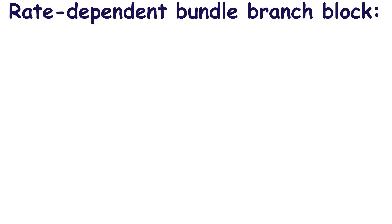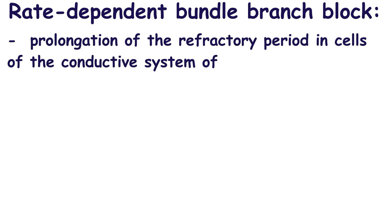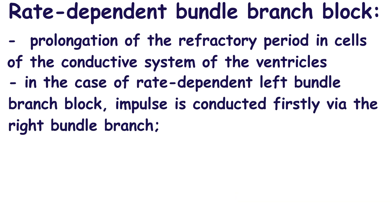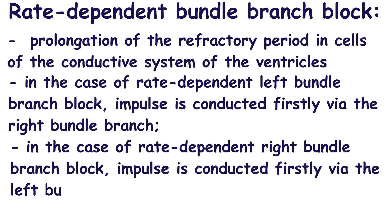The mechanism of rate dependent bundle branch block is based on prolongation of the refractory period in cells of the conductive system of the ventricles. Cells in the refractory period cannot conduct an impulse. So in the case of rate dependent left bundle branch block, the impulse is conducted firstly via the right bundle branch. In the case of rate dependent right bundle branch block, the impulse is conducted firstly via the left bundle branch.